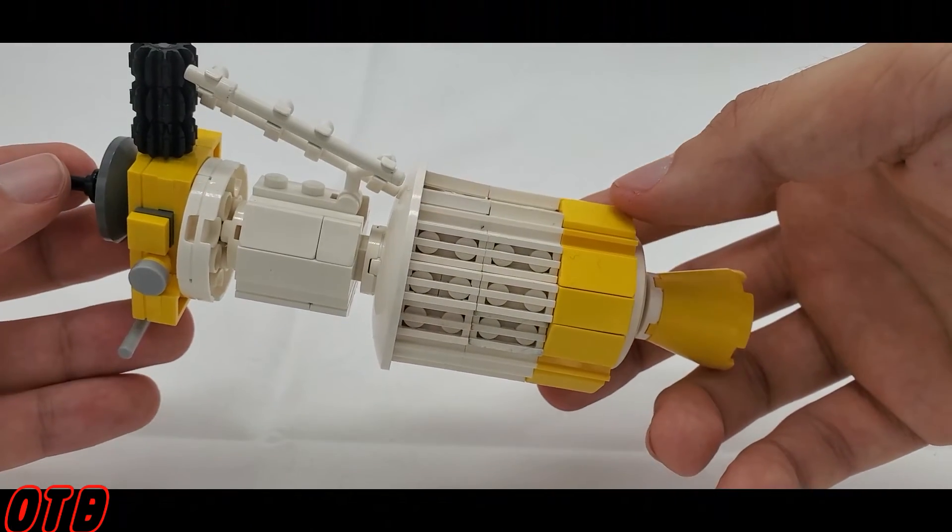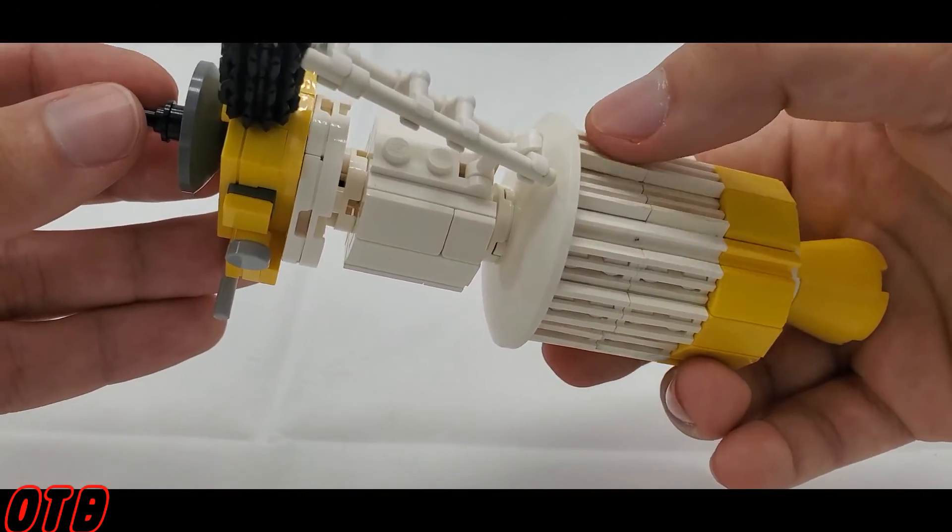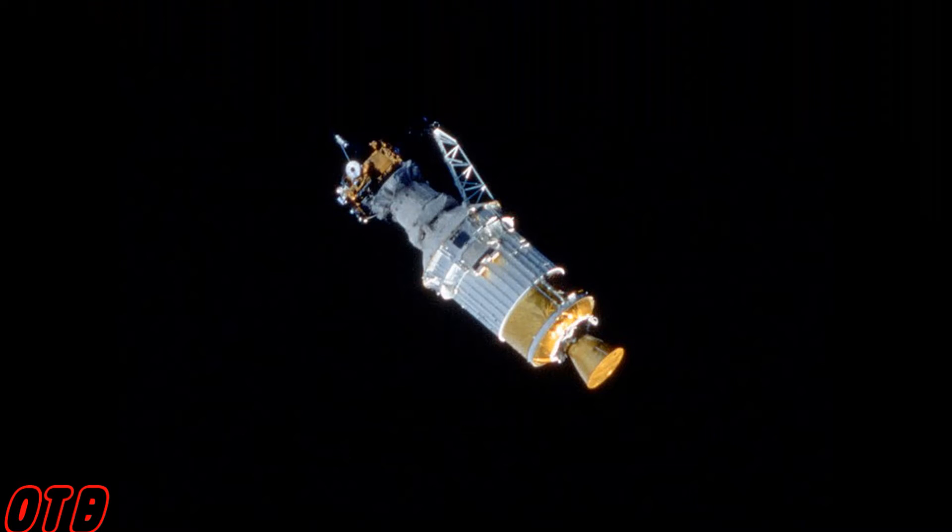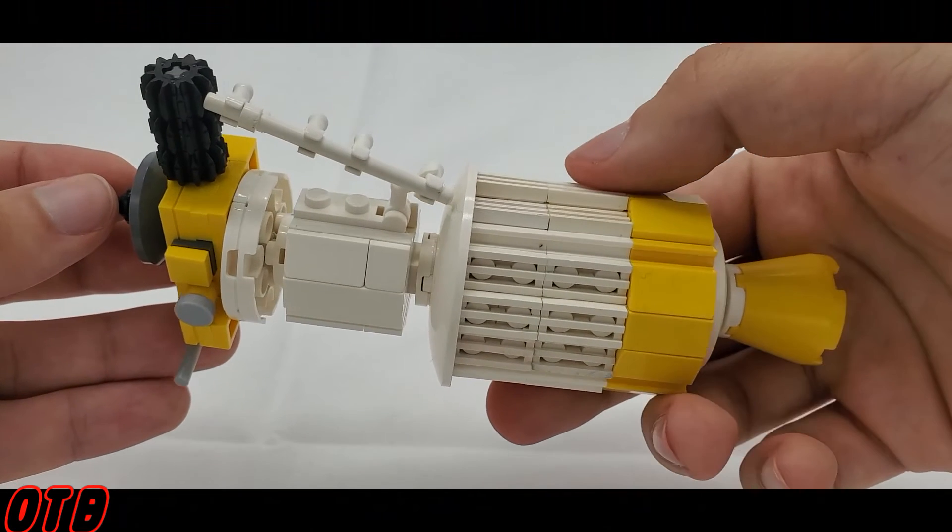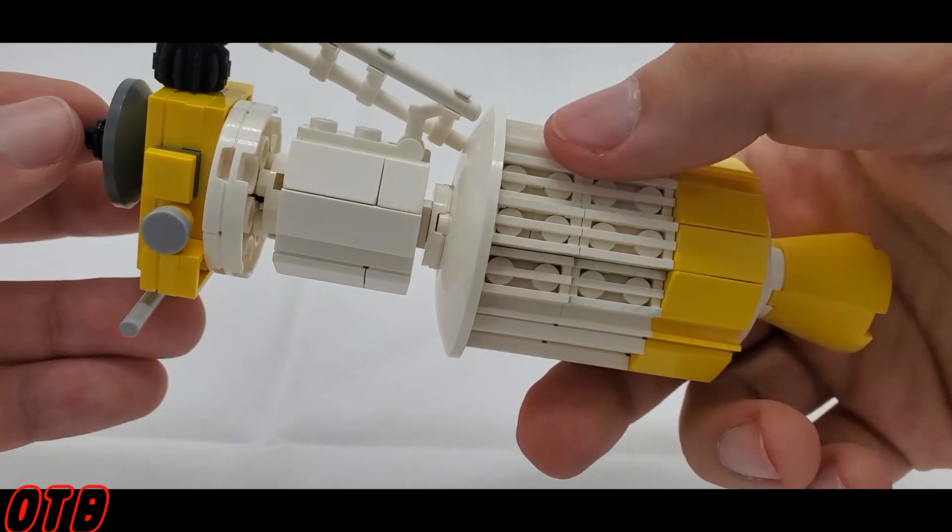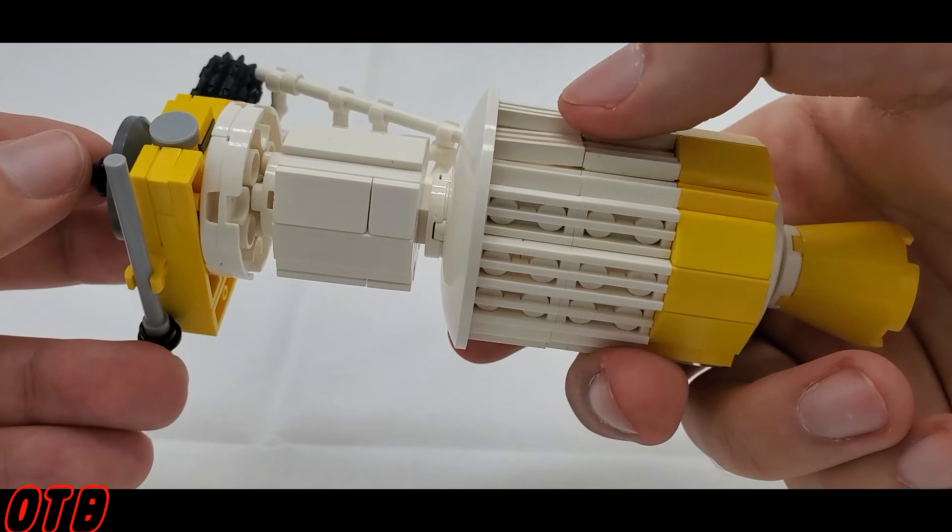For that matter, LEGO also has theirs be half white and half yellow when in reality you can see that's not the case. Muscovite's version is once again much more accurate when you can see that it is a majority of white with a strip of yellow.